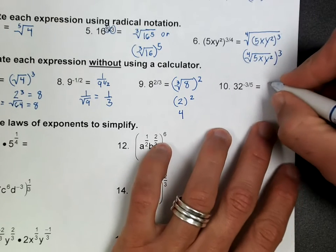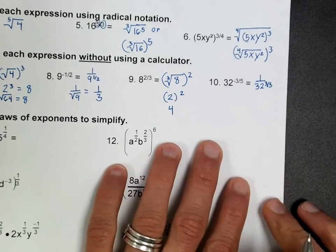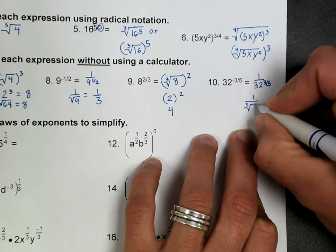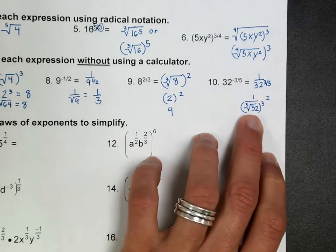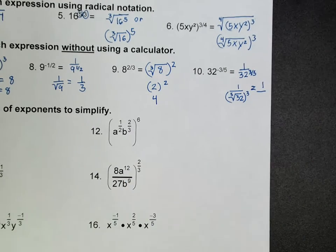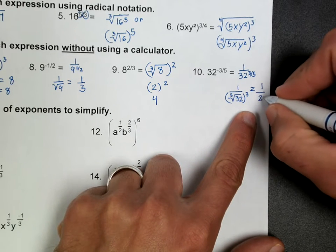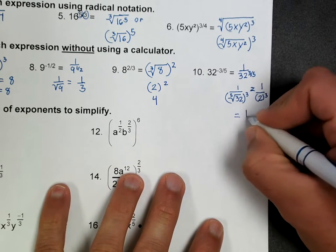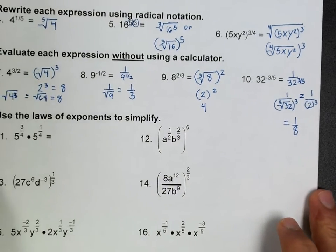On number 8, remember a negative exponent means we're going to put this on the bottom of a fraction. And that just means this is the square root of 9. The square root of 9 is just 3, so this is going to be one third. On number 9, same thing — remember the bottom is a root, so I always want to start with that. The cube root of 8 is 2, and if I square that, I get 4. On number 10, we have a negative exponent, which means we're going to put this on the bottom. I have 3 fifths here, and I'm going to take the fifth root. So I write it as one over the fifth root of 32 raised to the third power. The fifth root of 32 is 2, and 2 to the third gives one over 8.